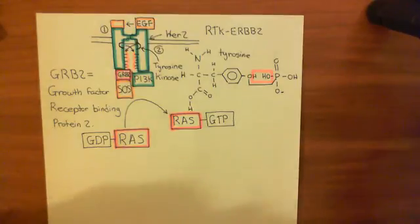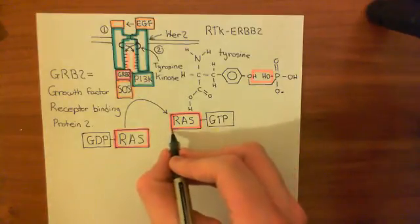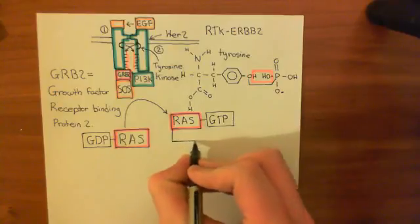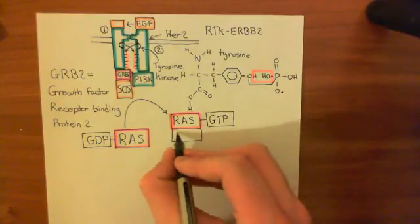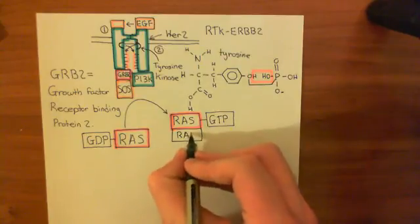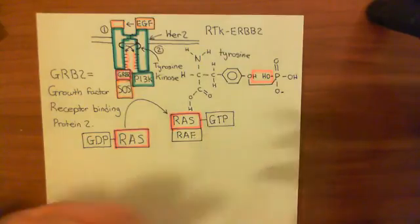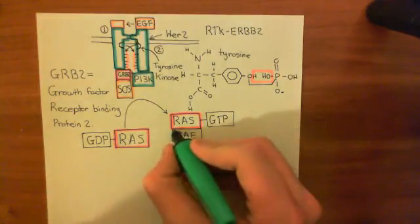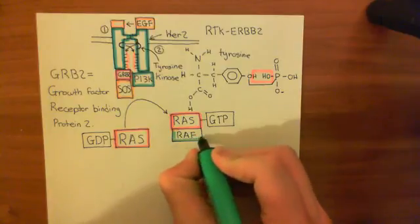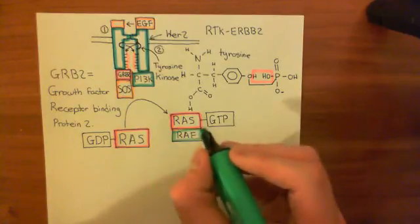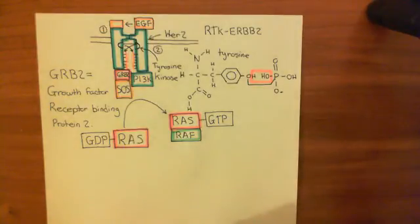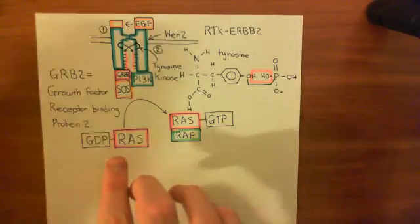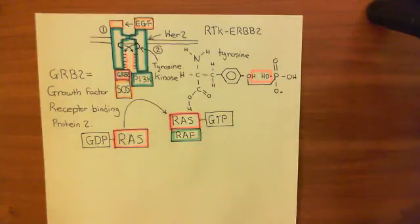The on-state RAS protein then binds to another protein — RAF. So RAS activates RAF. There are many different types of RAF, so we'll keep it general and call it a RAF protein. In general, the on-state RAS protein binds and activates the RAF protein.